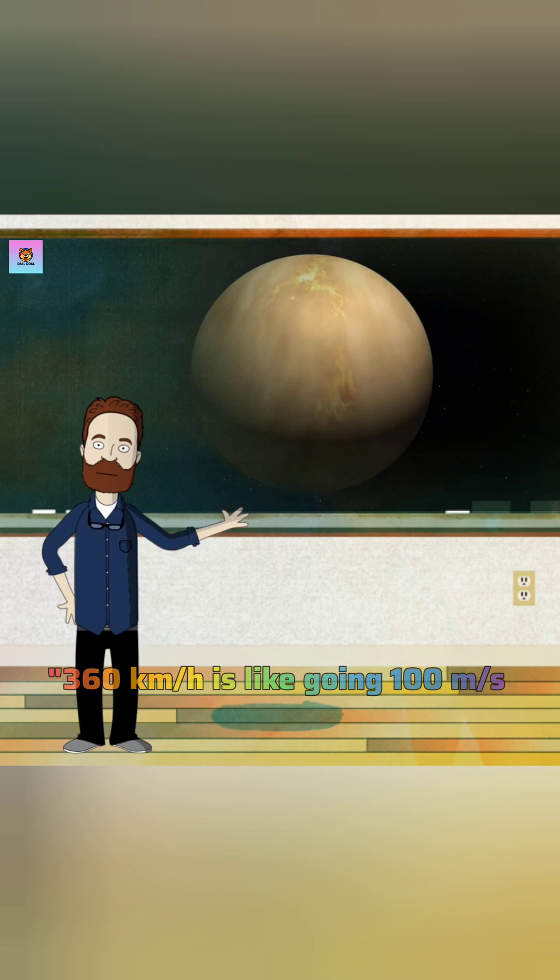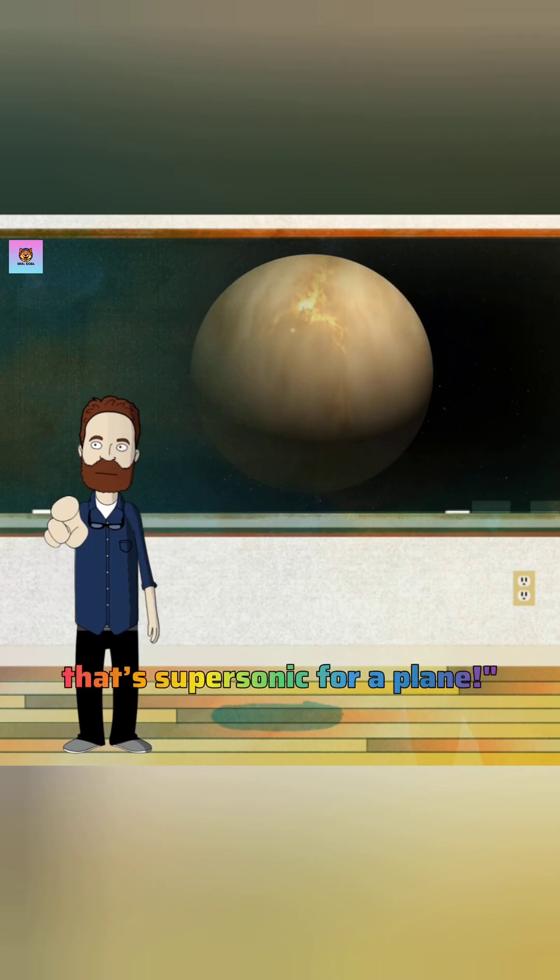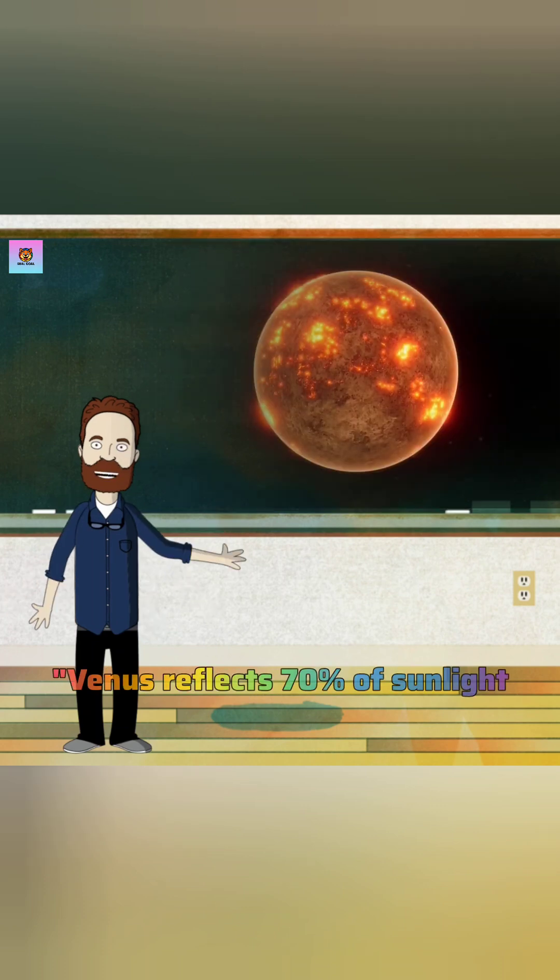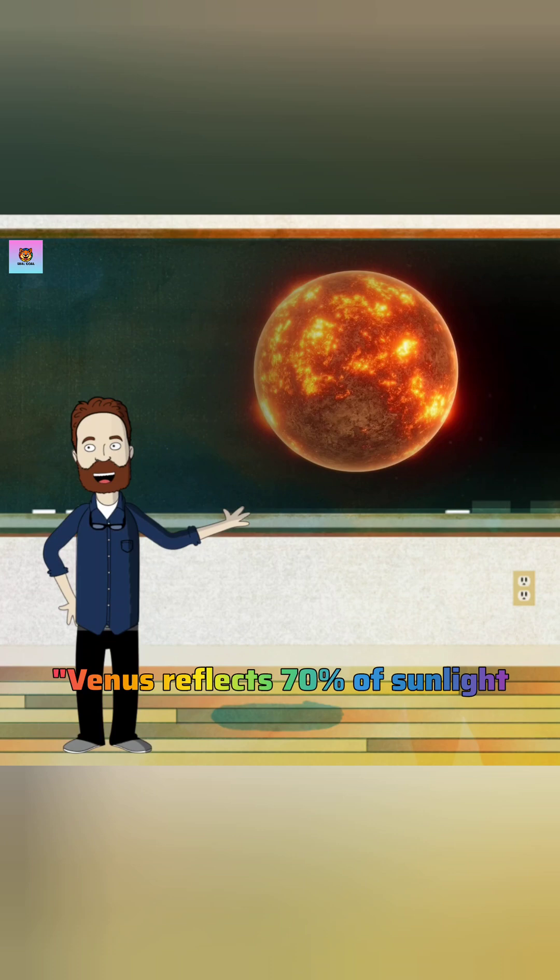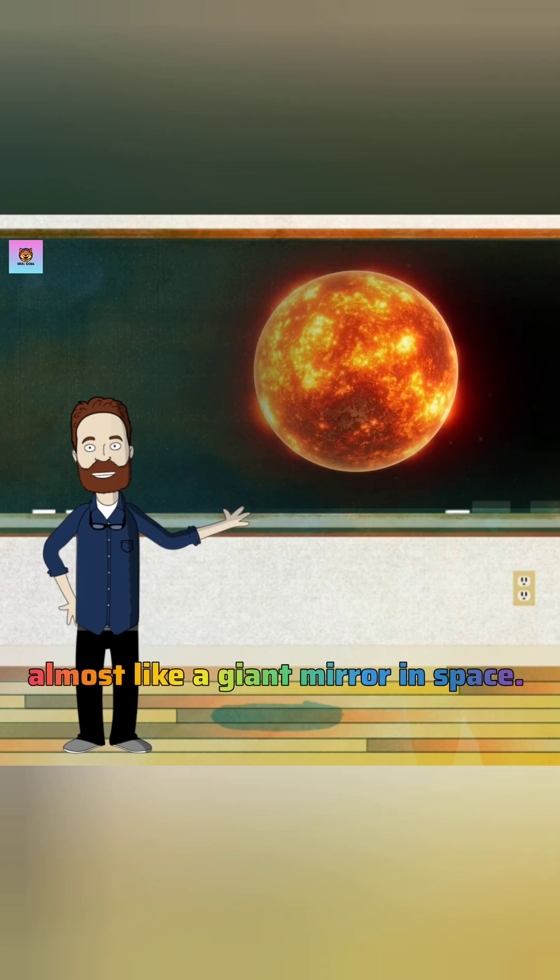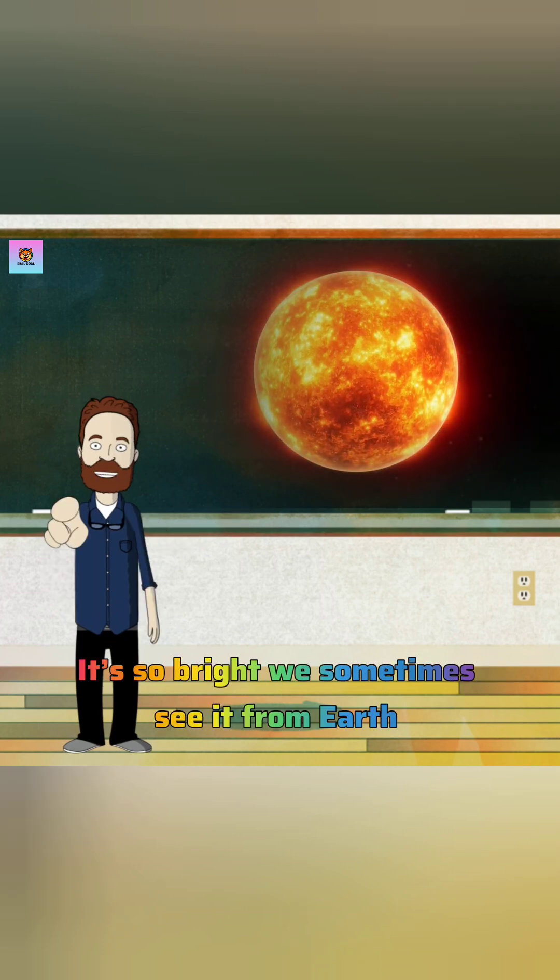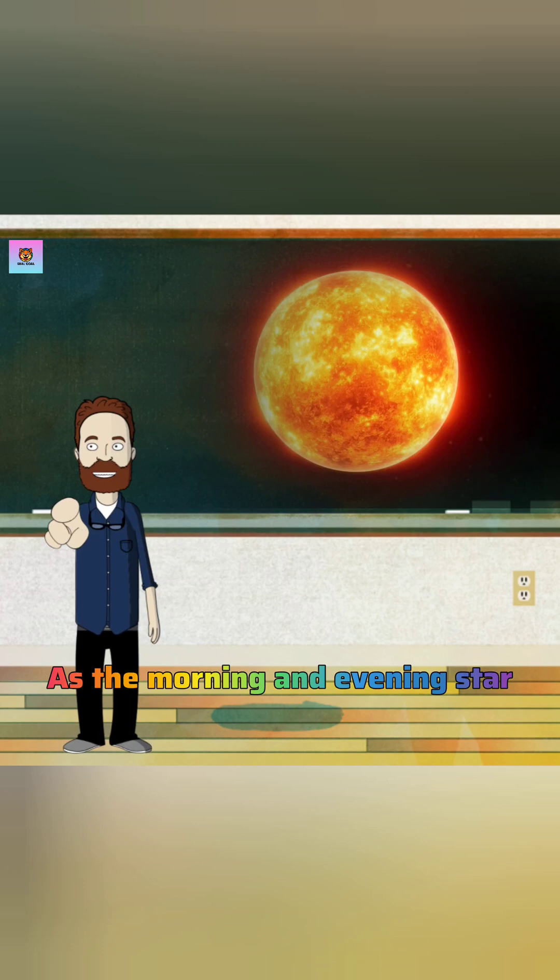Comparison: Venus reflects 70% of sunlight, almost like a giant mirror in space. It's so bright we sometimes see it from Earth as the morning or evening star.